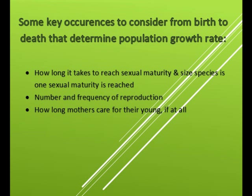Some key occurrences to consider from birth to death that determine population growth rate include: how long it takes to reach sexual maturity and the size a species is once sexual maturity is reached, number and frequency of reproduction, and how long mothers care for their young, if at all.